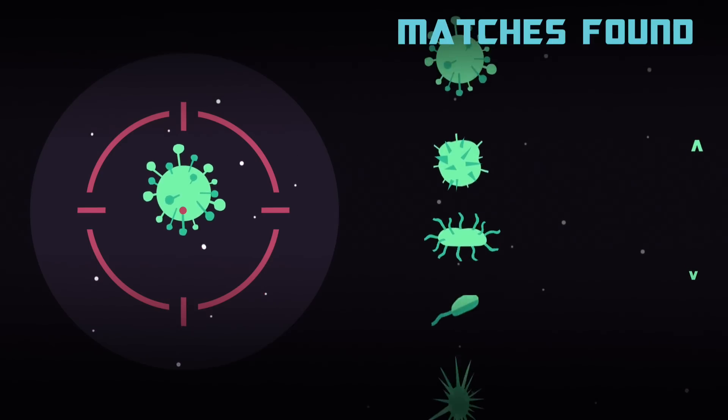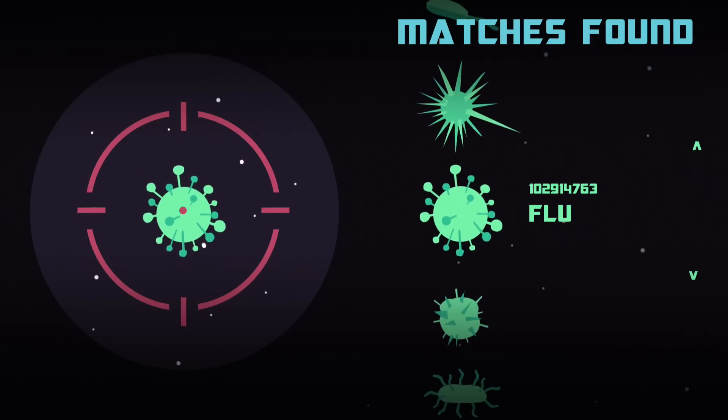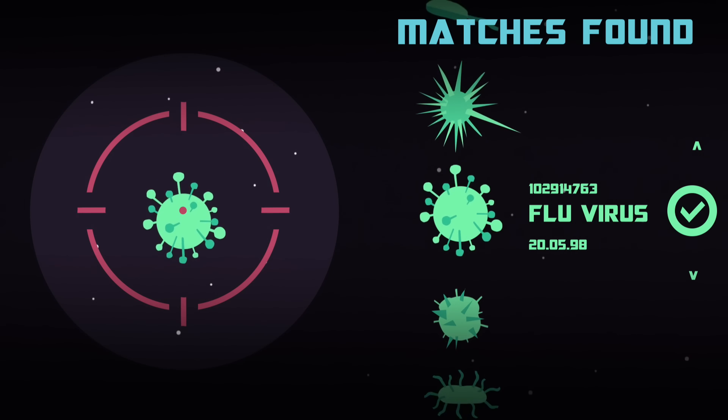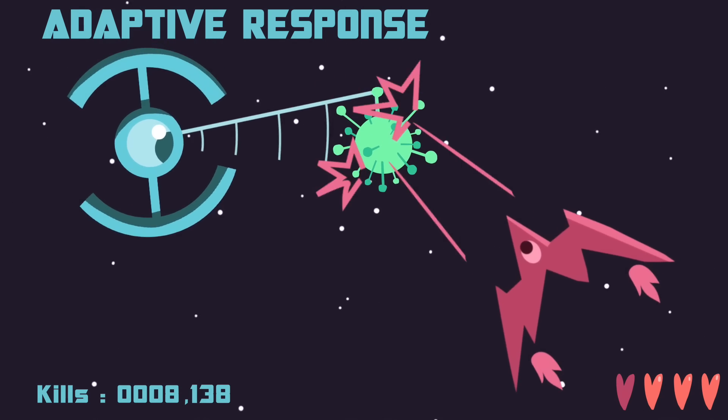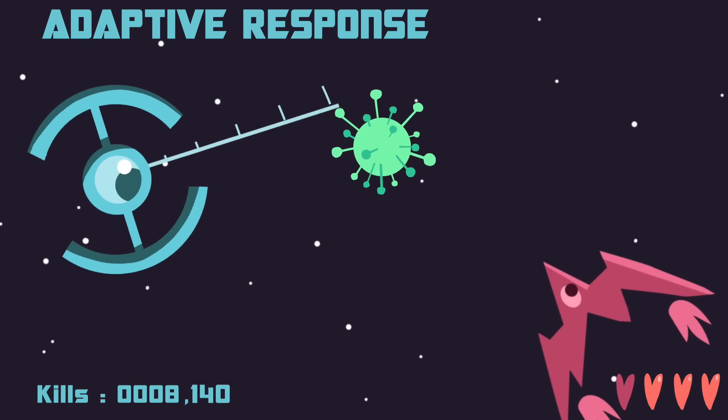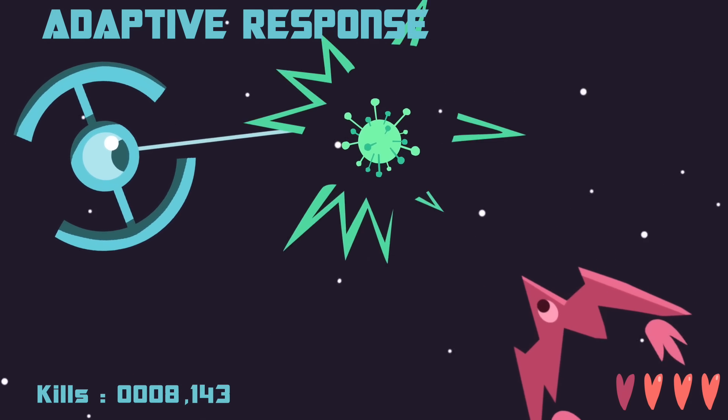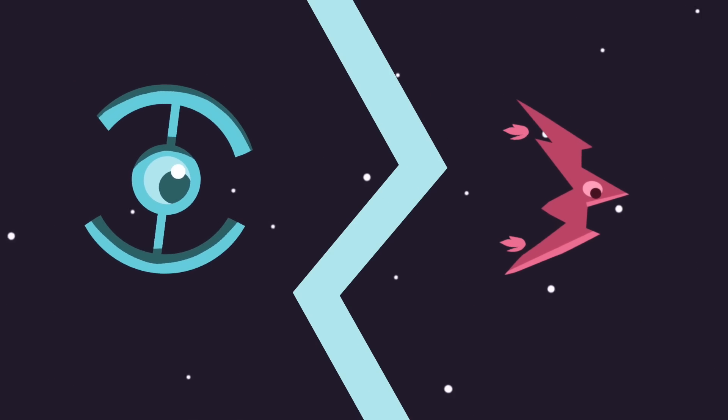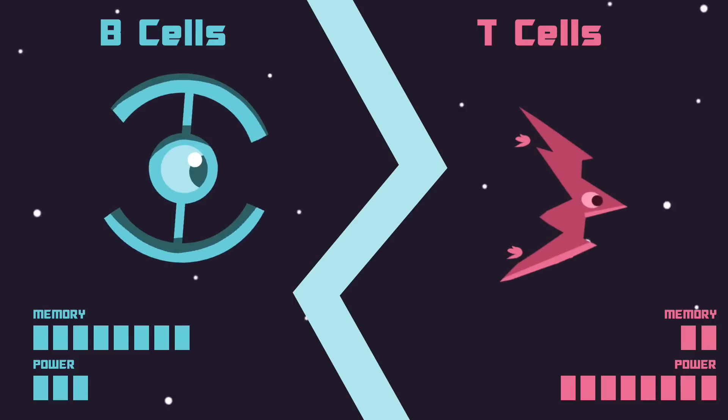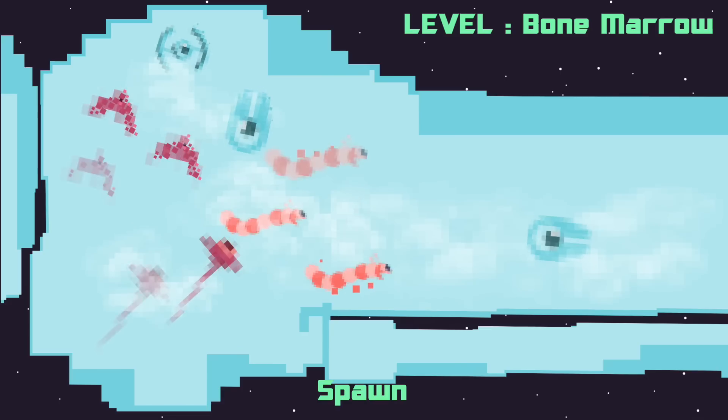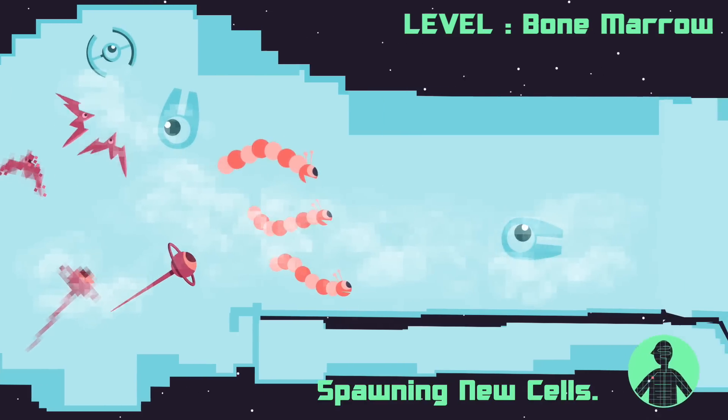White blood cells, or lymphocytes, are the mainstays of this adaptive system. They come in B and T versions, developing in the bone marrow and thymus. They move to the spleen and lymph nodes, looking for trouble.